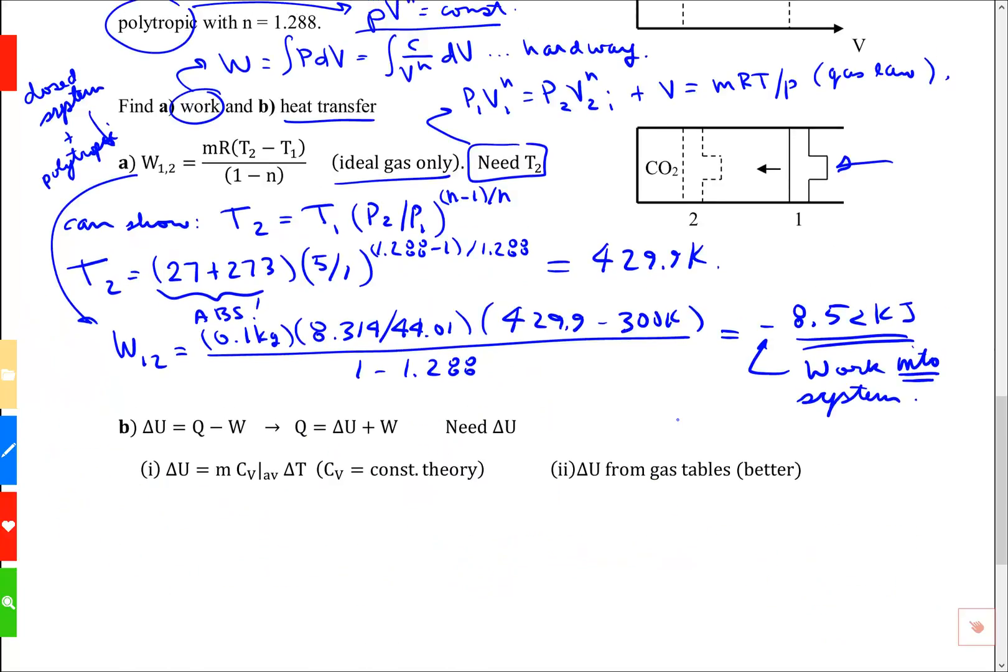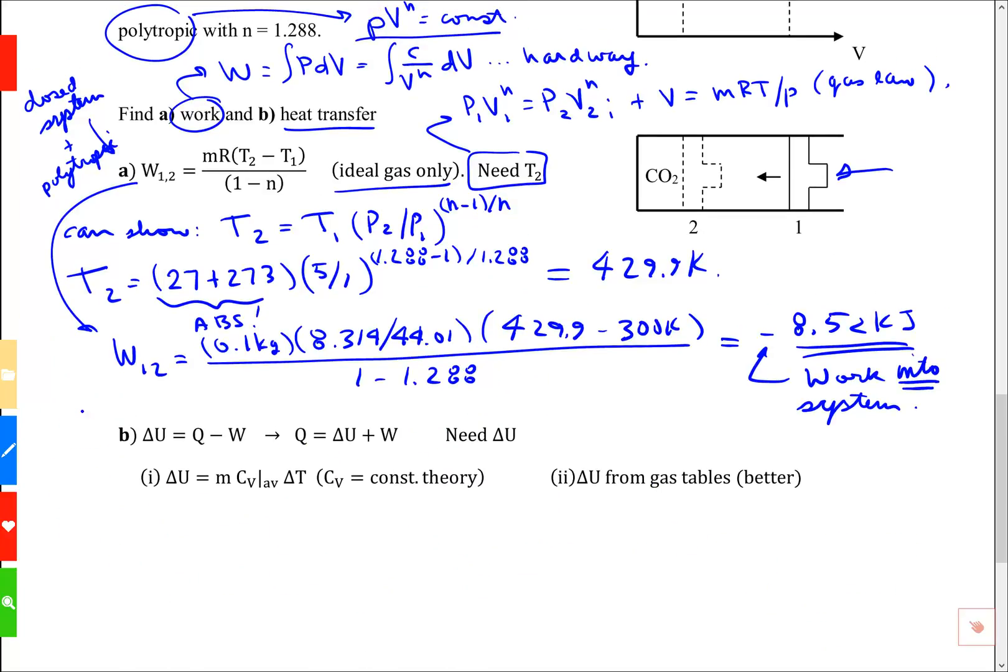Part B, closed system, the energy balance is a change in internal energy equals the heat minus the work. So we could solve for the heat, which would be the change in internal energy plus the work. If we've got the work, if we could find the internal energy, we've got it.